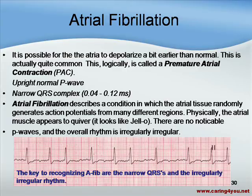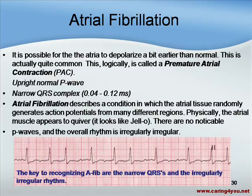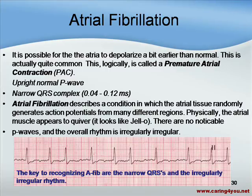The key to recognizing A-fib is the narrow QRS complexes and the irregularly irregular rhythm. You can see on the strip that there's no regular pattern — it's all over the place, completely irregularly irregular.